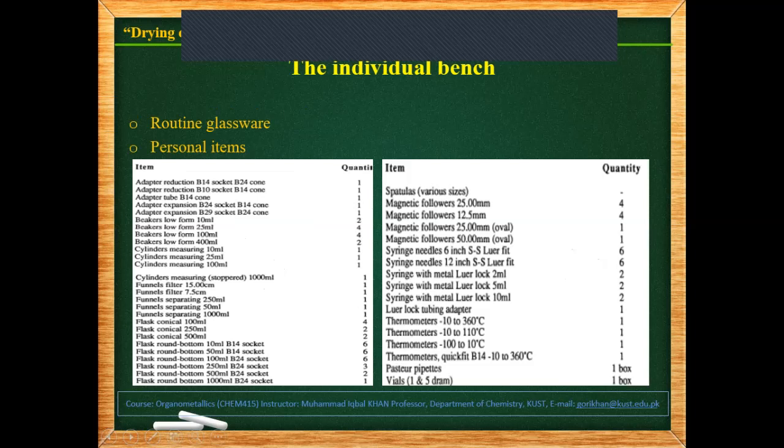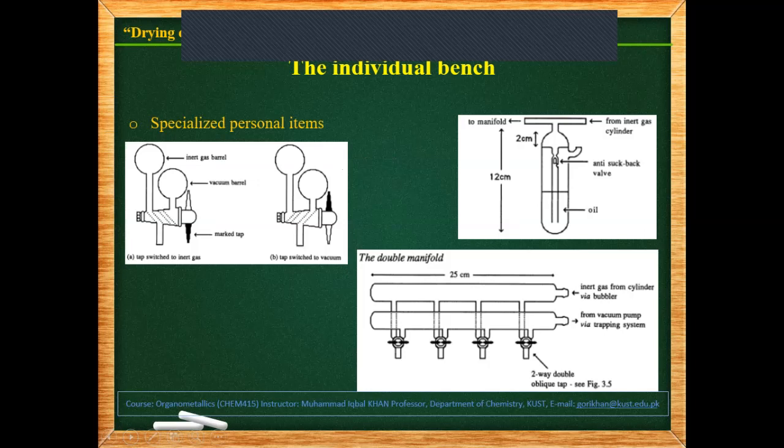We move on to routine glassware and personal equipment, which is usually used by a research student. Different types of glassware are here, and you will also see magnetic stirrers and spatulas, thermometers of different ranges, Pasteur pipettes, vials, et cetera. Those are the general-purpose equipment used by a research student.